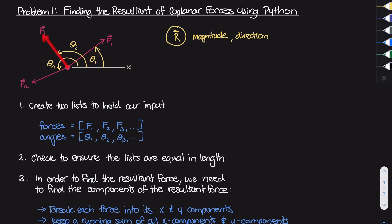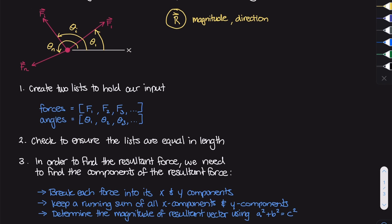If you had Fi — which could be force two, three, or four, any force — it's going to have an angle theta i. And all the way up to Fn, it's going to have an angle theta n. You'll notice that all of these forces are making these angles from the horizontal x-axis. So if you had a force somewhere over here, the corresponding theta for that force would span from the x-axis up to that force. So to start off, we are going to have to create two different lists, and these two lists are going to hold our input.